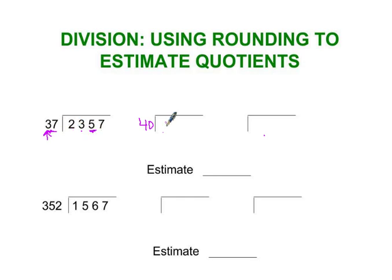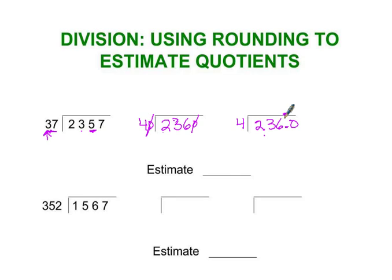So 2,357 rounds to 2,360 because we're rounding to the tens place. Then we're going to drop a zero in each one — just cross out that zero and that zero. And we're going to make this 4 into 236.0. I'm putting a .0 on there so that I get a decimal answer, which I can then round. I normally don't do that when I estimate, but for these problems I'm going to do that.